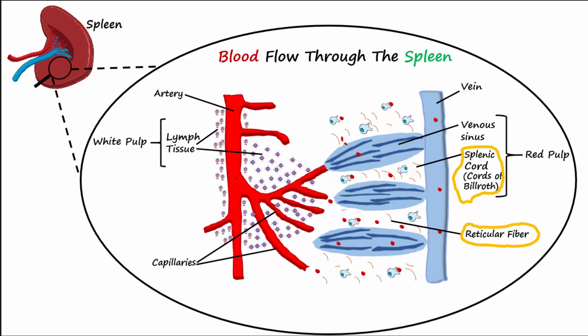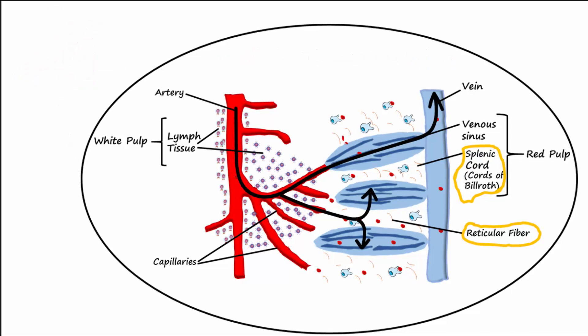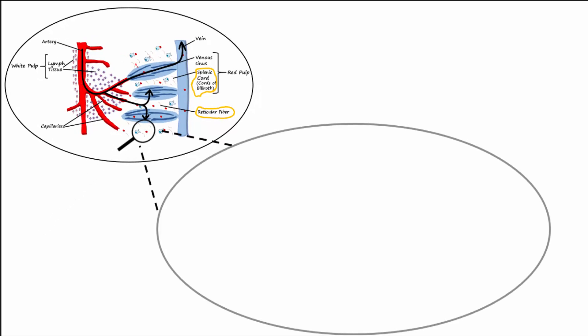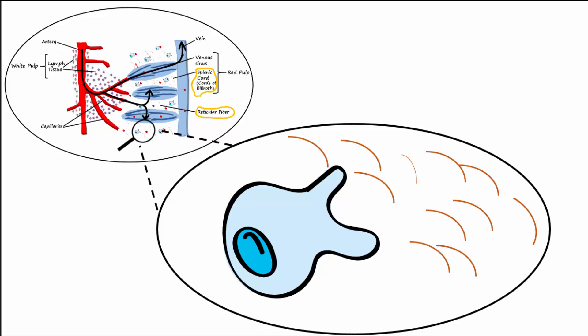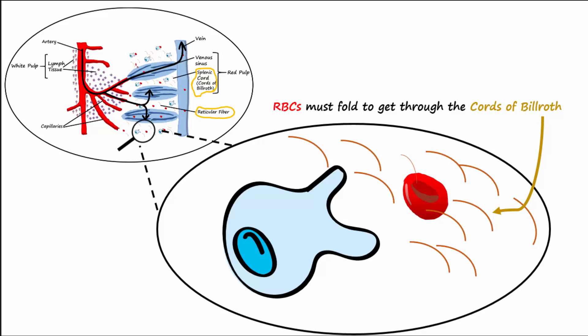Most of the blood flows through the spleen quickly, but a portion of the red blood cells must slowly navigate their way through these reticular fibers of the spleen's red pulp. The passageways to get through the reticular fibers are so small that this requires folding of the red blood cells. Old or senescent erythrocytes lose this folding ability, and the cells end up rupturing in the cords of Billroth.